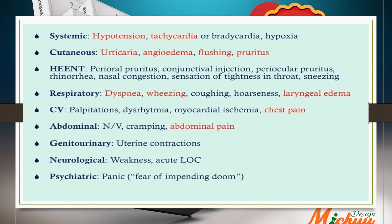Overall, systemic symptoms such as hypotension, tachycardia, bradycardia, and hypoxia can occur. Cutaneous symptoms such as urticaria, angioedema, flushing, and pruritus may also occur, along with upper and lower respiratory, cardiovascular, abdominal, genitourinary, neurologic, and psychiatric manifestations — all of which can be signs of anaphylaxis.